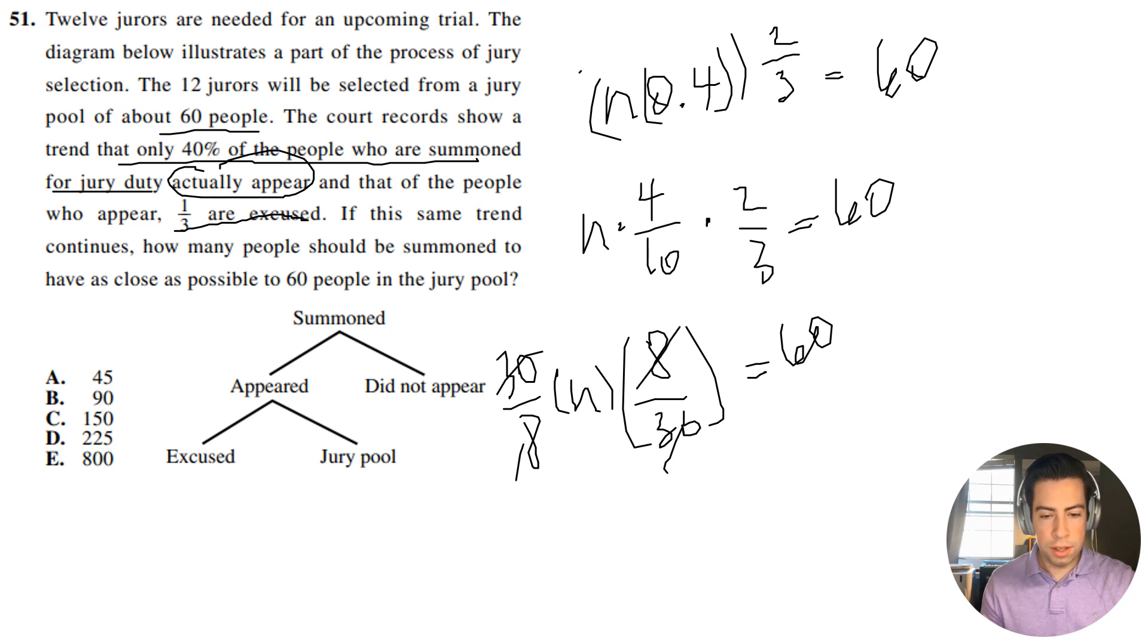So I'm going to multiply by 30 over 8. I should cancel out. Then I'll multiply by 30 over 8.